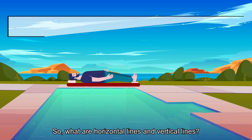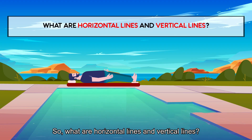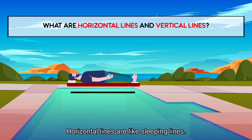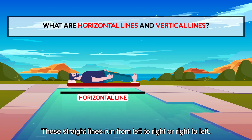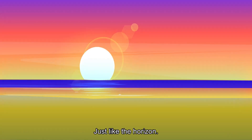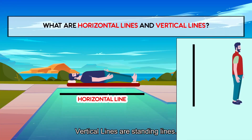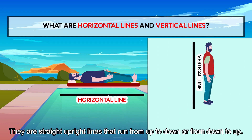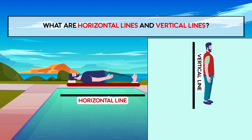So, what are horizontal lines and vertical lines? Here's an easy way to remember them. Horizontal lines are like sleeping lines. These straight lines run from left to right or right to left, just like the horizon. Vertical lines are standing lines. They are straight upright lines that run from up to down or from down to up.